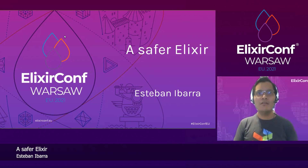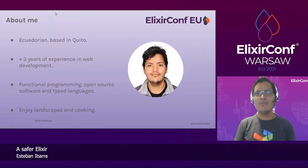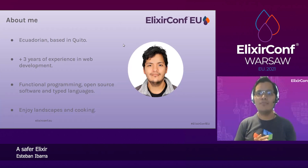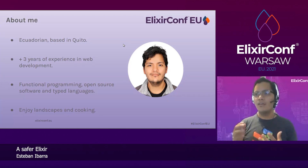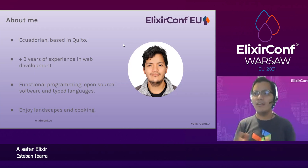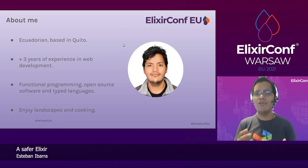A little about myself: I'm based in Ecuador, I currently live in Quito, and I have more than three years in software development. I'm really fond of functional programming and typed languages. Elixir is not itself a strongly typed language, but it is functional. Other languages I enjoy include Haskell, OCaml, and TypeScript. In my free time I enjoy landscape walks and cooking.